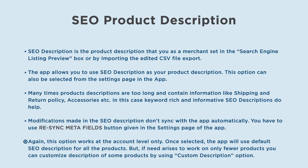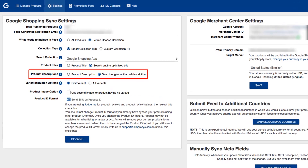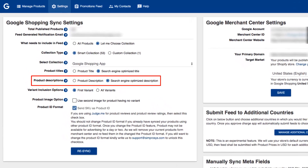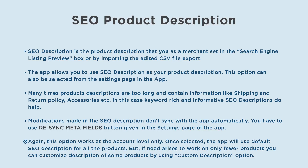Again, this option works at the account level only — once selected, the app will use the default SEO description for all the products. But if the need arises to work on only fewer products, you can customize the description of some products by using the custom description option.